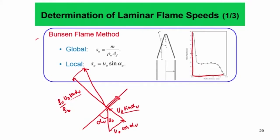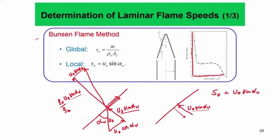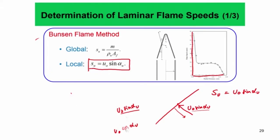Mass conservation is given by the normal velocity across the surface area, which is why you get that relationship, while the tangential component remains u₀ sin α_u, causing the deflection of the velocity. Most importantly, if this flame is stabilized, then from the reference frame of the flame, the flow is approaching at a velocity of u₀ sin α_u. Because the flame is in a stationary state, this is essentially the flame speed. So the local flame speed is given by S_u = u₀ sin α_u. This is how we can locally calculate the flame speed of a Bunsen flame.